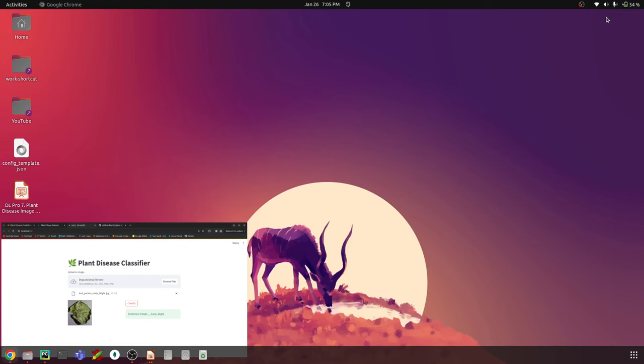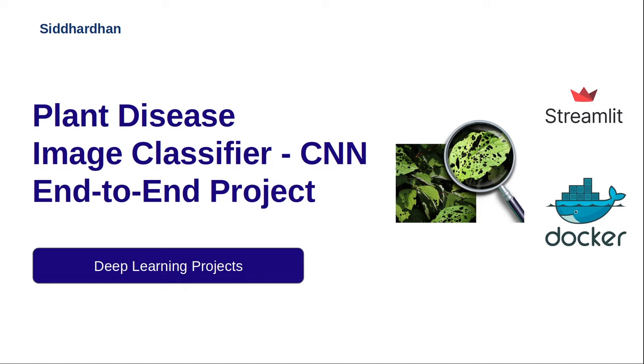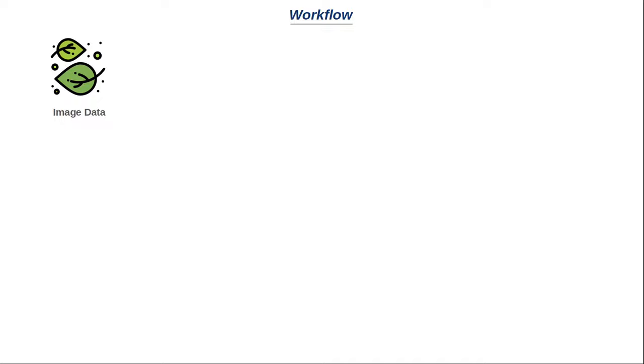This is the end product of what we are trying to build. Before getting into the coding aspects, let's quickly understand the workflow. The first step is data curation. Since this is an image classification model, we need proper image data. We will use a Kaggle dataset. I will show you how to get the Kaggle JSON file, which contains your Kaggle account credentials, and load it in Python to get this dataset through an API. I'll be working on Google Collaboratory.